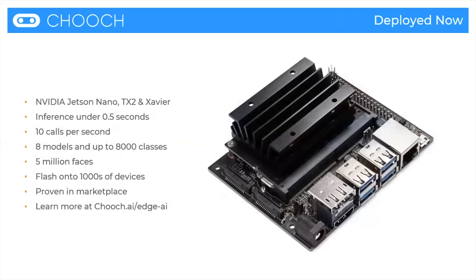We're deployed now on the Jetson Nano, TX2, and we're also working on the Xavier. We're able to achieve ten calls per second and put up to eight models with up to 8,000 classes onto each device. We can flash onto many devices at the same time.